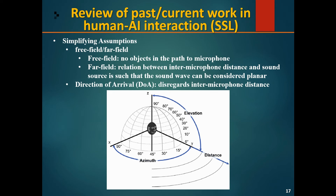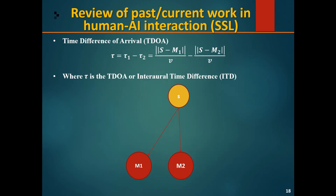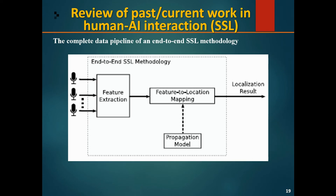Most studies for this subject use spherical coordinates, though there are times Cartesian coordinates are used. Another key concept is the time difference of arrival (TDOA) — literally the time between when the sound hits microphone 2 and when it hits microphone A. This is the complete data pipeline of an end-to-end sound source localization methodology: extract features, apply propagation measures, map features to locations, and get the localization result.